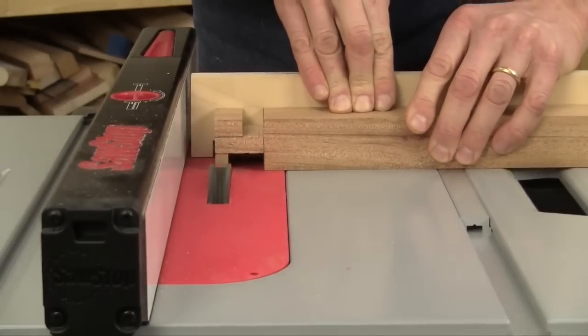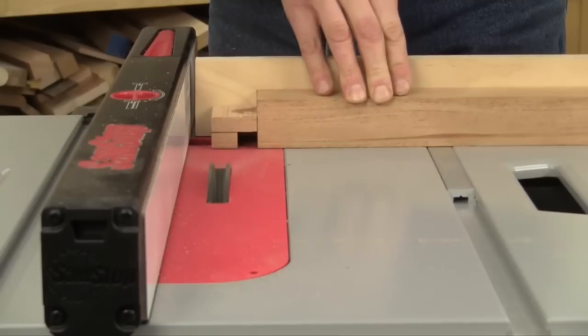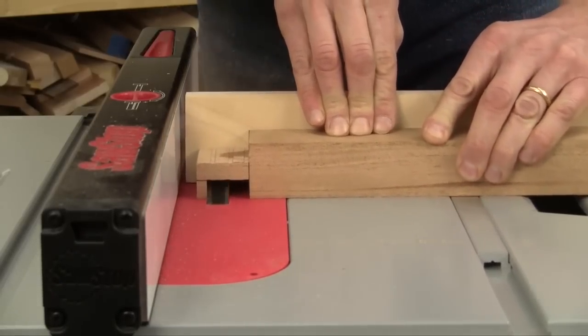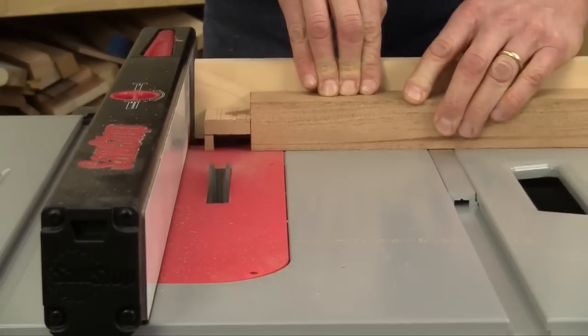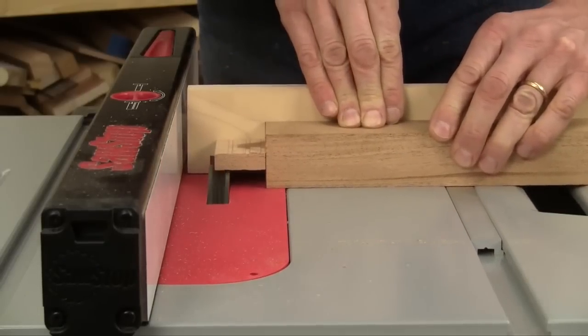Slide your workpiece down the miter gauge, make a pass, pull it back over the dado blade again and reset for the next cut. Leave your rip fence locked right where it is. Once you've worked your way down the end of one cheek, flip the workpiece over and clean off the second cheek.